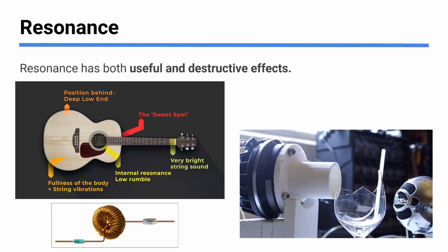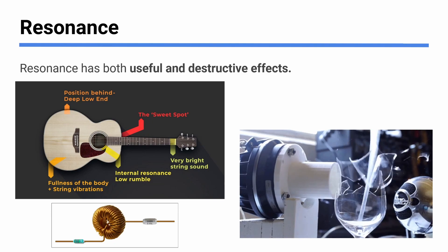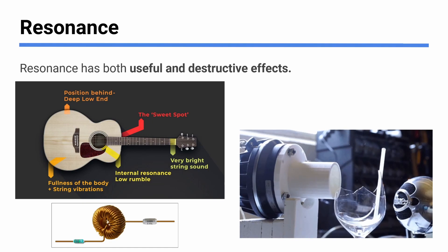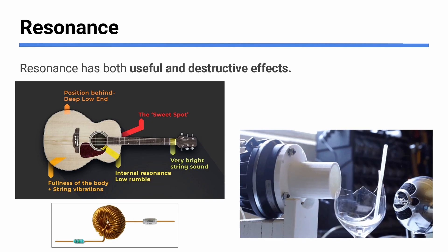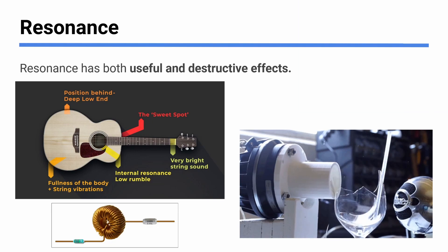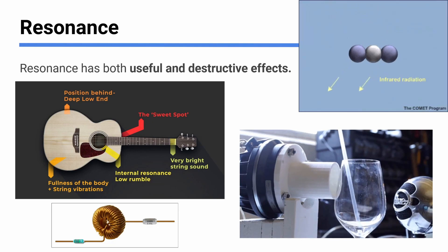There is resonance in some types of circuits. We don't get into these too much in the IB, but there is some electrical resonance. Essentially you can get an alternating current signal — an electrical signal — and amplify it with these resonance effects by matching certain frequencies.